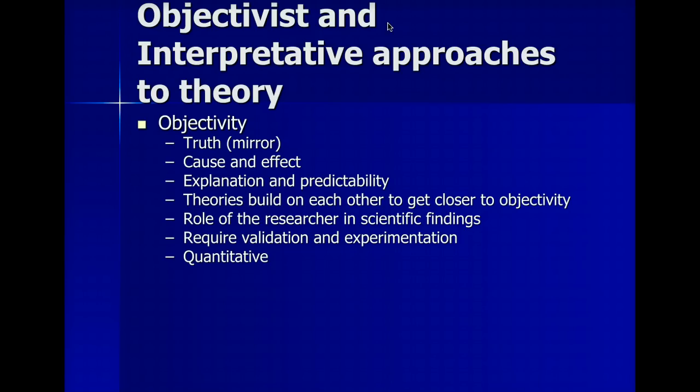Objective theories build on each other. So one objective theory will find something, and then another scientist will come along and build off of that because that's already been established. Now, these require validation and experimentation to actually make this happen. And we often talk about quantitative data. Quantitative data is generated from objective theories.